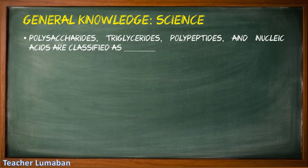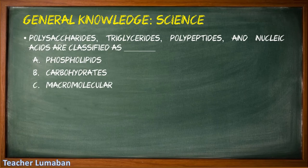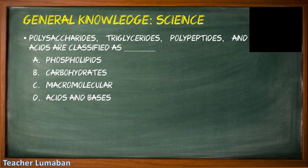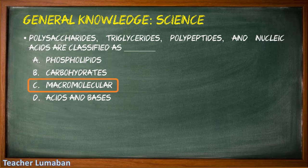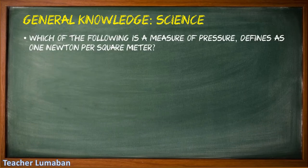Polysaccharides, triglycerides, polypeptides, and nucleic acids are classified as blank. Letter A: phospholipids, Letter B: carbohydrates, Letter C: macromolecules, Letter D: acids and bases. The correct answer is Letter C: macromolecules. A macromolecule is an enormous molecule such as a protein, composed of thousands of covalently bonded atoms. Many macromolecules are the polymerization of smaller molecules called monomers.